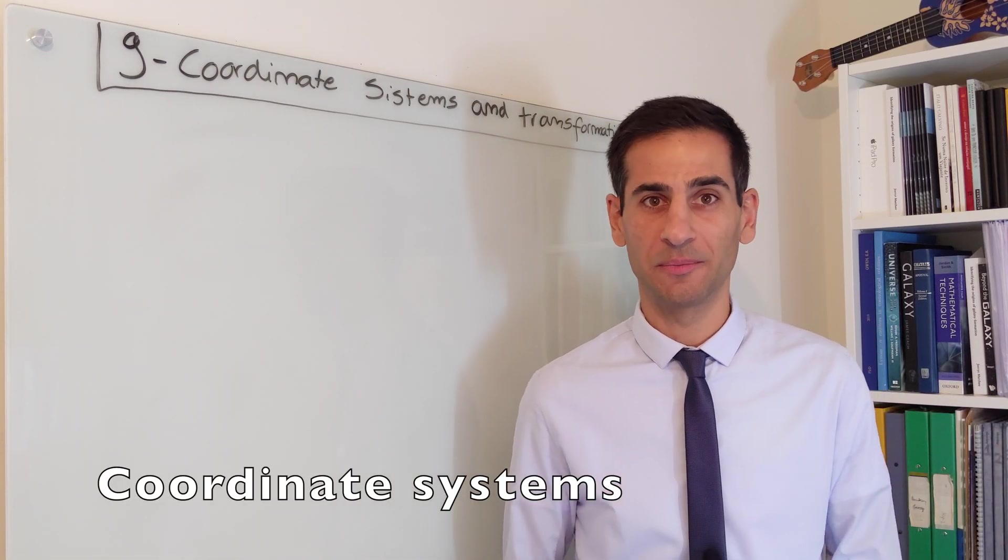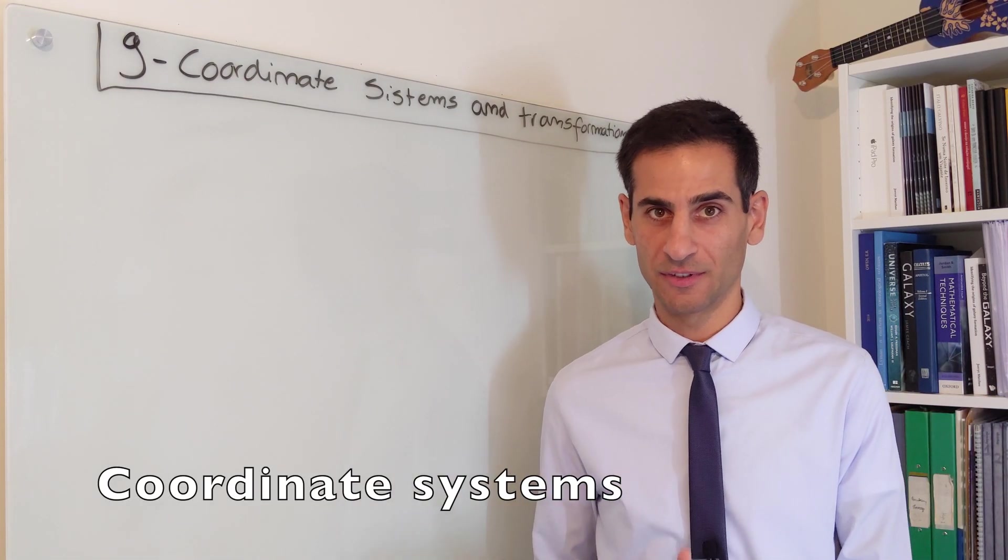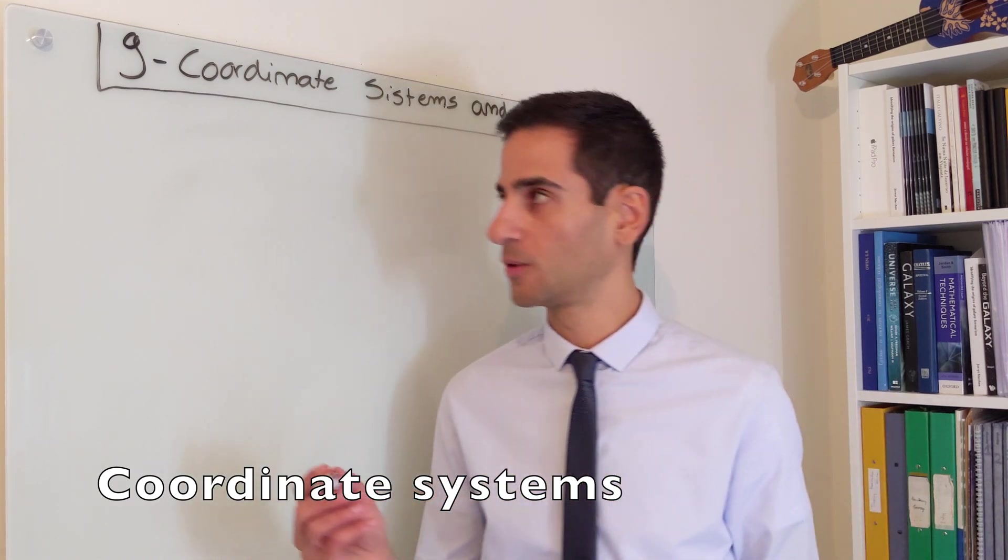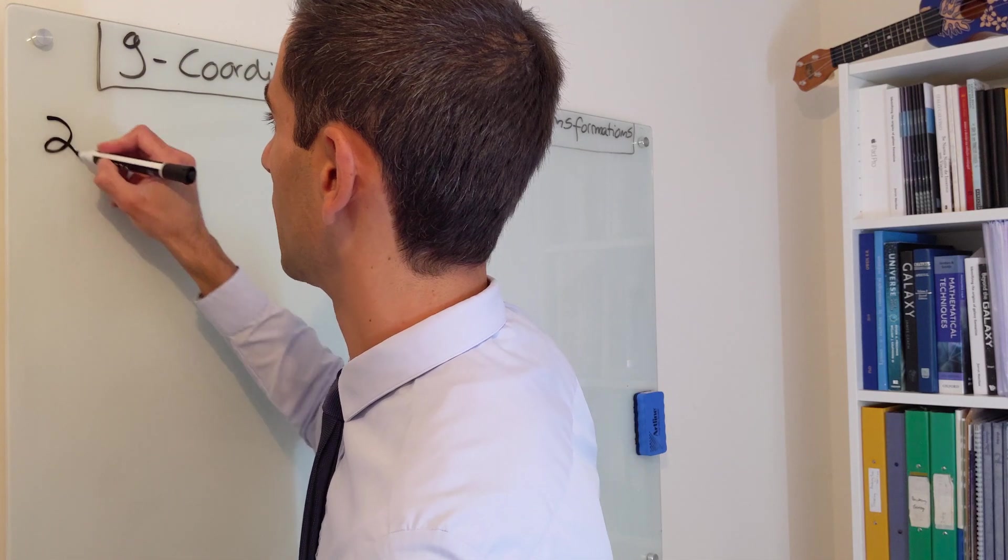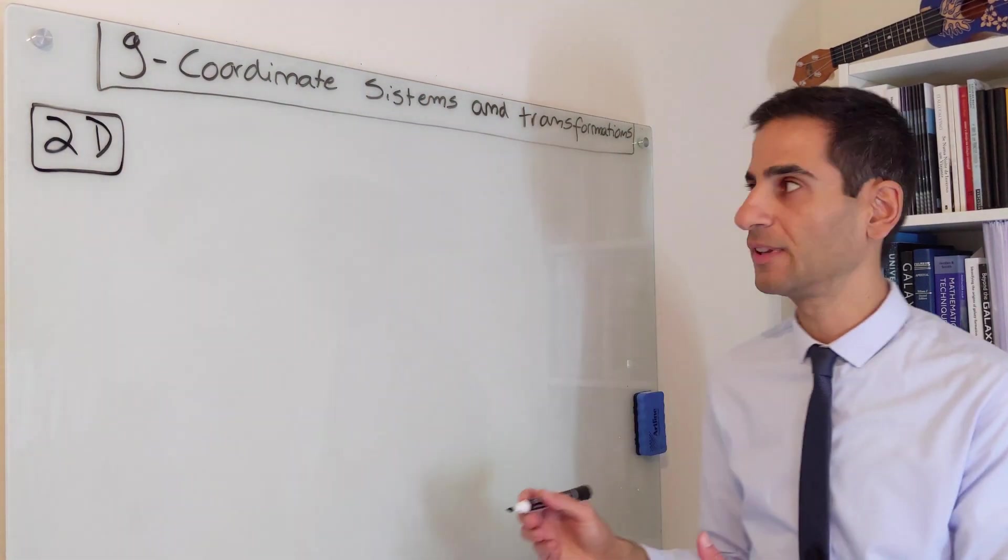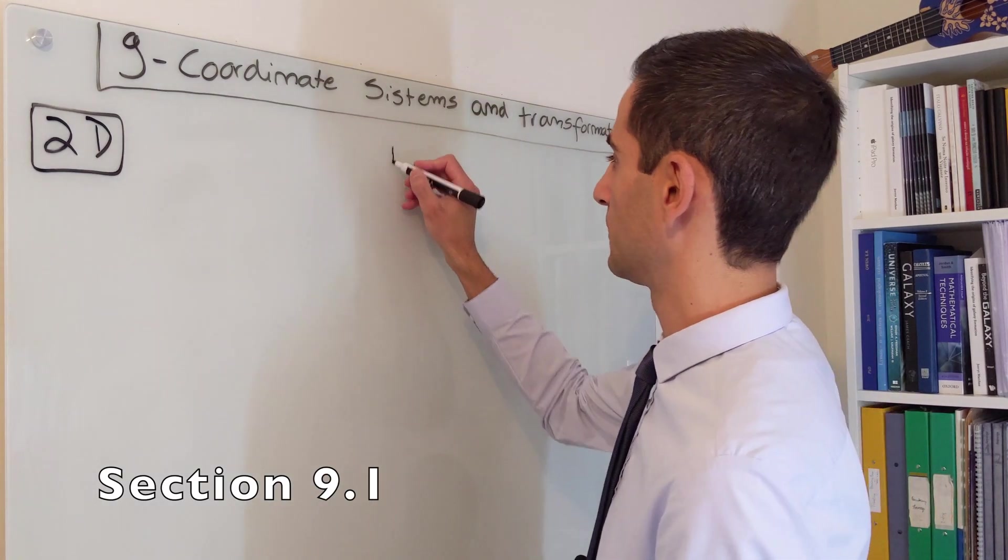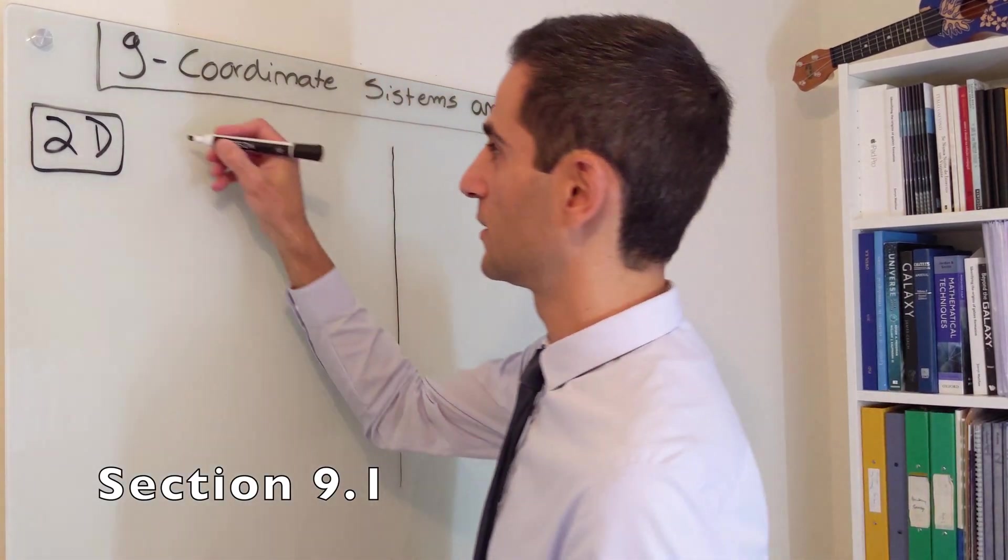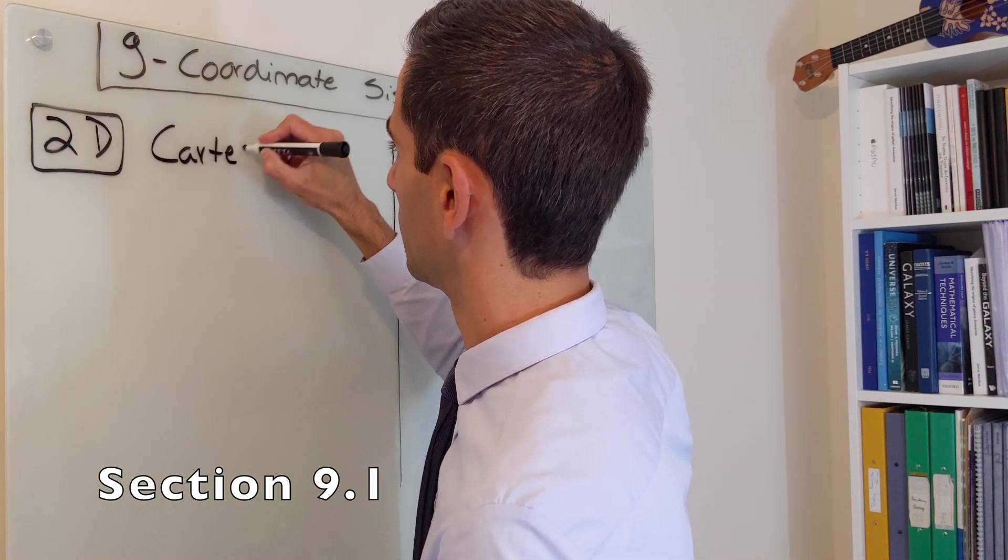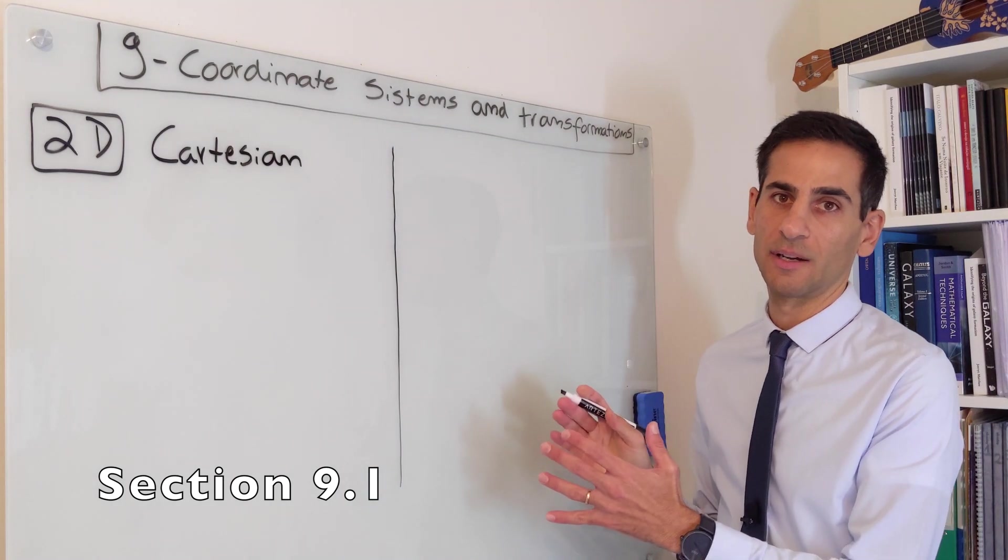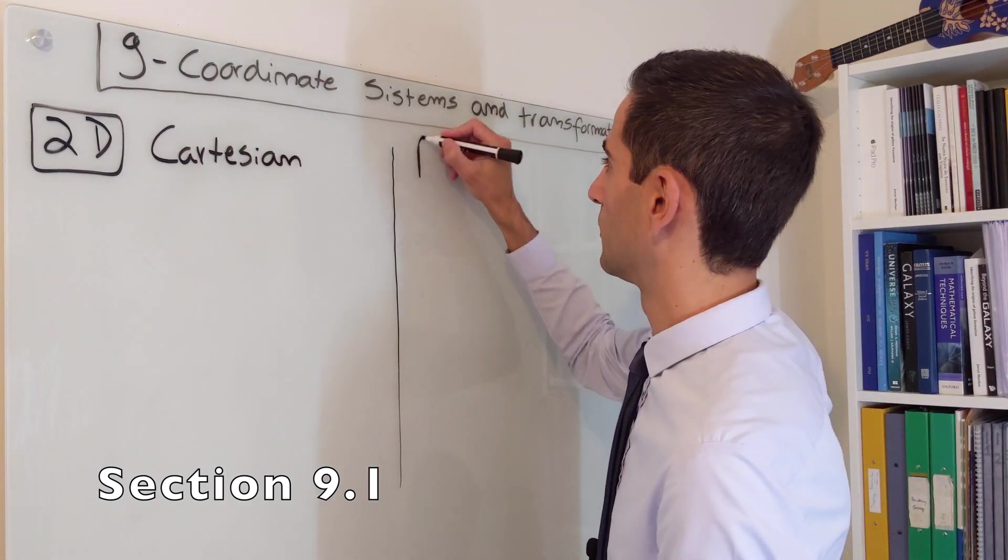Coordinate systems are incredibly important in both maths and physics. First, we're going to have a look into coordinate systems to describe 2D spaces. We can briefly split the world into coordinate systems that are Cartesian and the other types of coordinates that are polar.